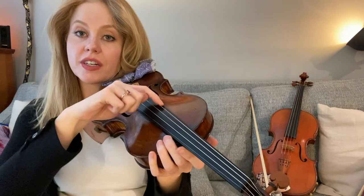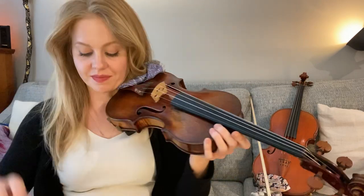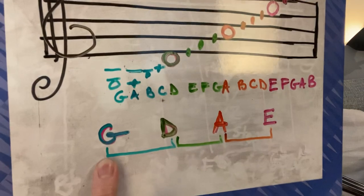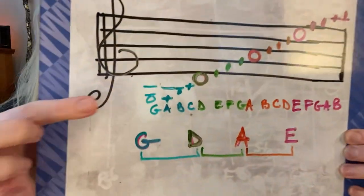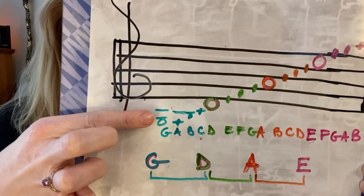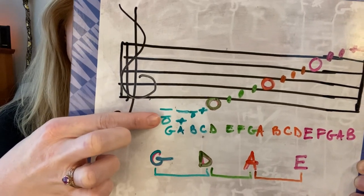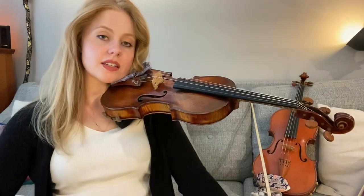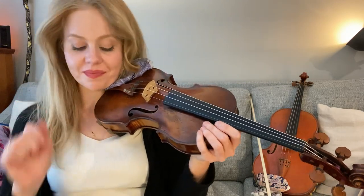This is our lowest string — this is the G string. That's your bottom note right down here. It's your bottom space and it's two ledger lines down. It's a space note, two ledger lines down. That is your bottom string on the violin.